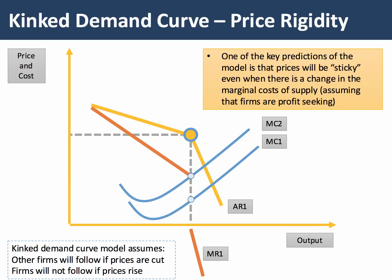There are many different models of oligopoly in imperfect competition, one of which is the kinked demand curve model, illustrated here. The kinked demand curve arises because we assume there's a varying reaction from rival firms to a price change. We assume other firms will follow if prices are cut — hence demand becomes inelastic — but firms will not follow if prices rise, because they aim to increase their market share, making demand more elastic. One prediction of this model is that prices tend to be anchored or sticky at a certain level, even if there's a change in marginal costs, and that non-price competition becomes a hugely important feature of oligopolistic markets.